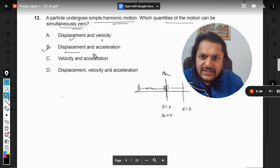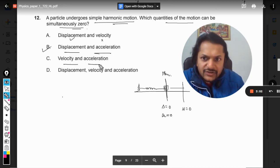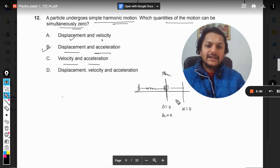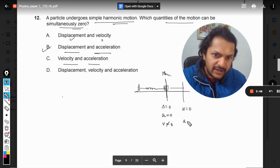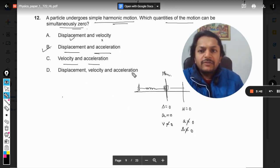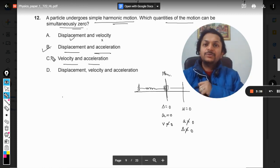Your answer will be B, that is displacement and acceleration. In C it says velocity and acceleration - not at all, because when acceleration is zero, velocity is not zero, and here acceleration is not zero and displacement is also not zero. So the answer is definitely B. My name is Professor Maroon.